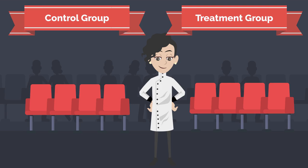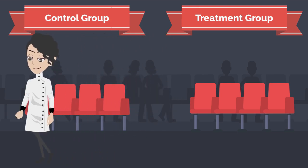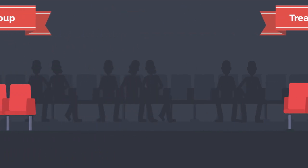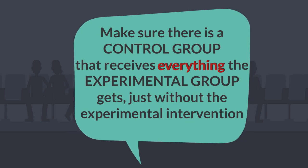Every time you assess a research study, you should make sure there is a control group that receives everything the experimental group gets, just without the experimental intervention. This will help you judge if the experiment has good internal validity or not.